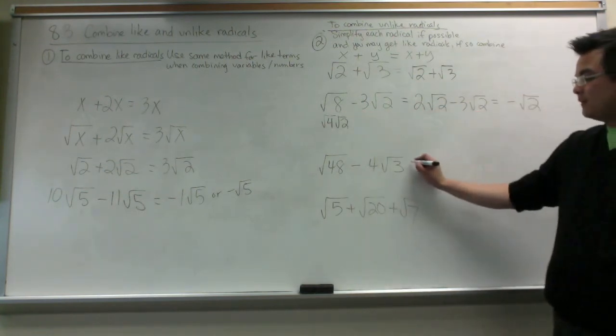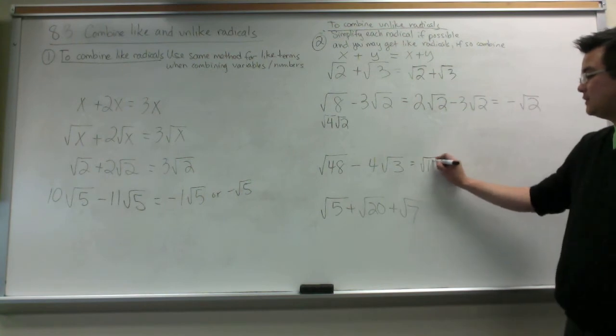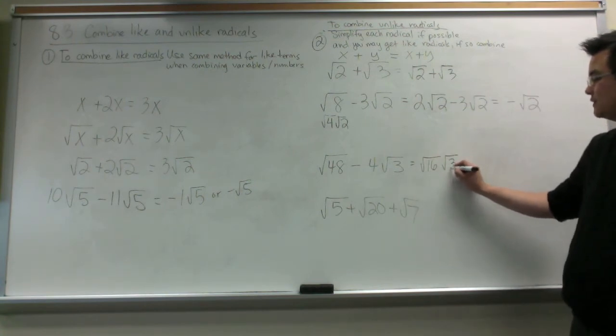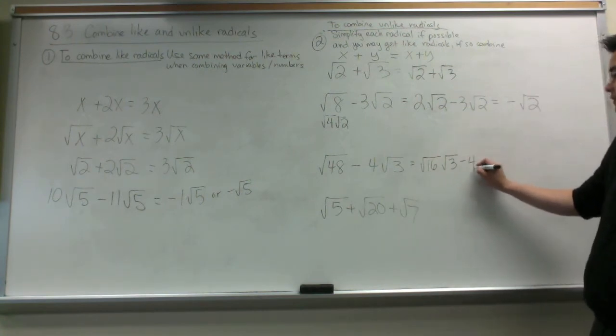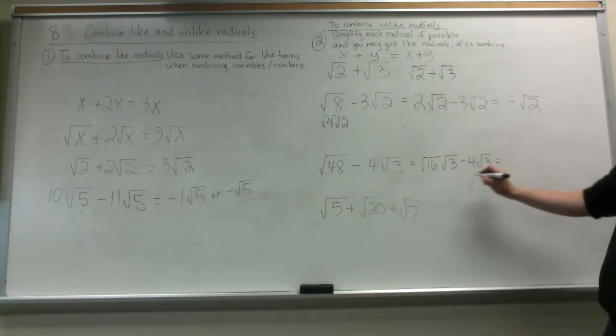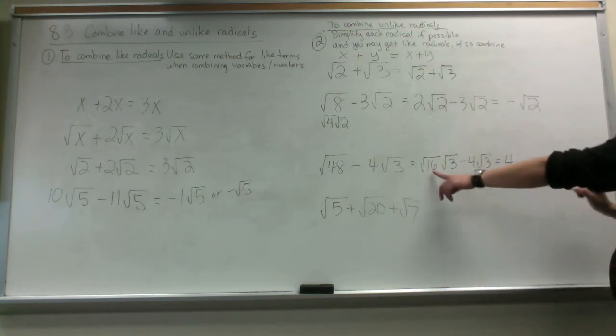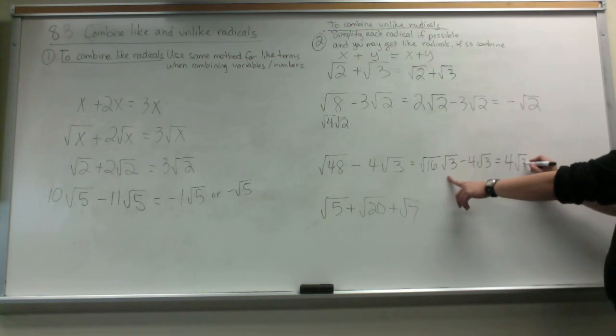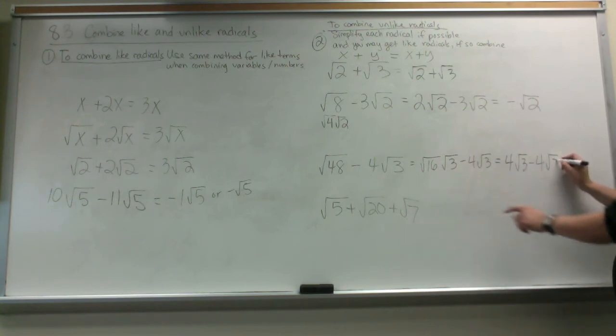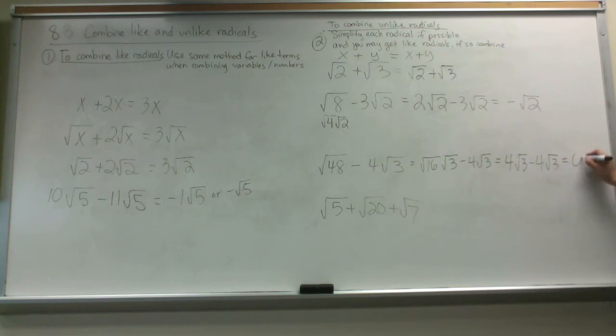So my next example, root 48, I can simplify to root 16 and root 3 minus 4 root 3 equals. And then root 16 is 4 root 3 minus 4 root 3. Now I have my like terms. 4 root 3 minus 4 root 3 is equal to 0.